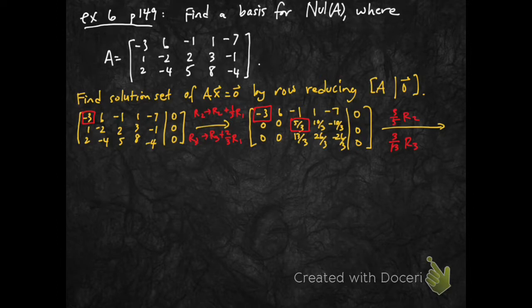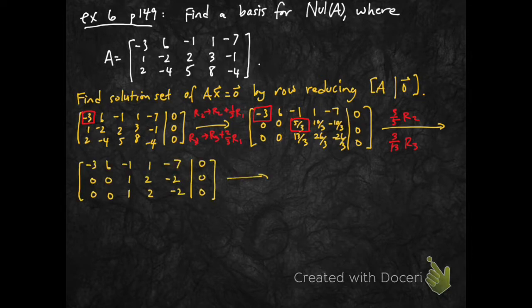But, I think it would be a little bit easier to see if I just turn these fractions into maybe slightly nicer looking numbers. So, let me go ahead and scale row 2 by 3 5ths, and scale row 3 by 3 5ths. Okay. That's nicer.